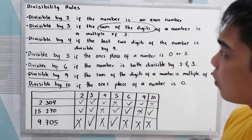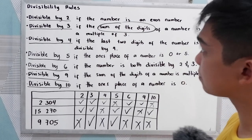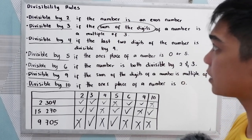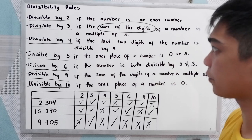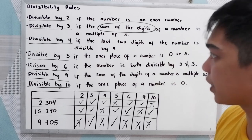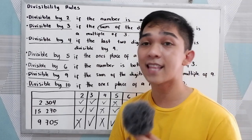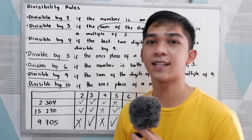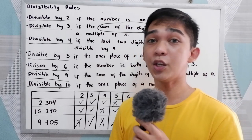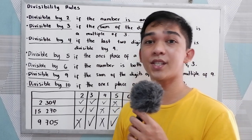So those are our divisibility rules for 2, 3, 4, 5, 6, 9, and 10. Thank you for watching.